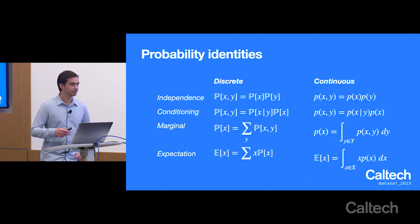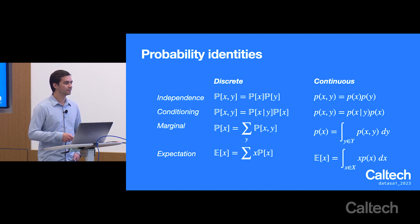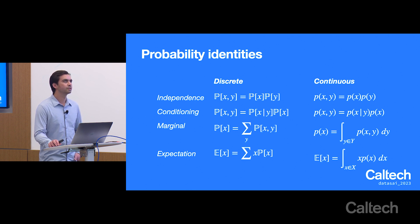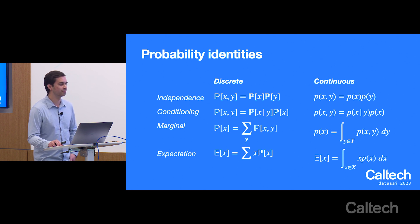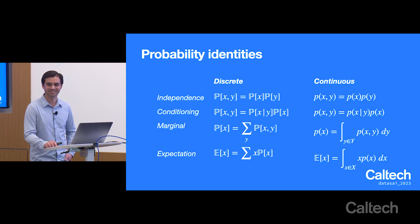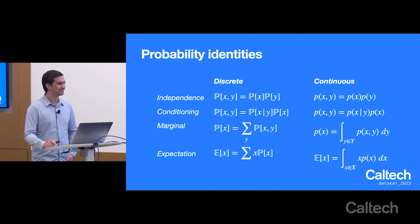A student asks whether there are realities that can't be modeled with a probability distribution. The answer is that there's no physical reality that cannot be modeled by a probability distribution — with the possible exception of quantum mechanics.